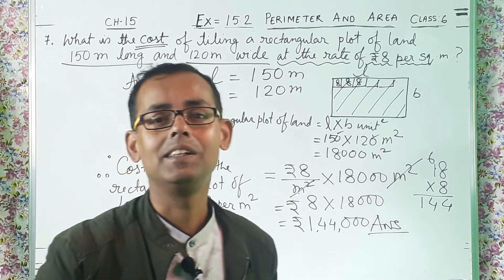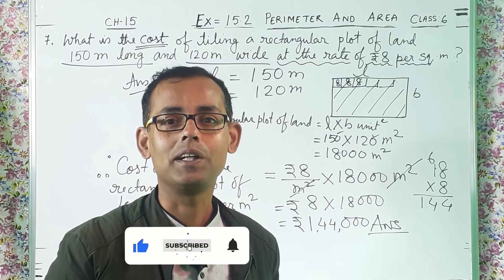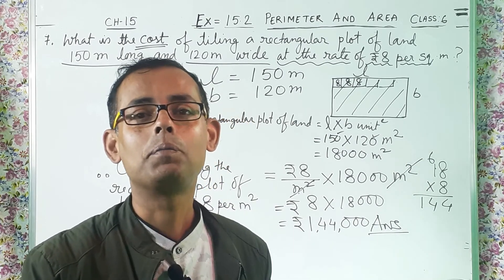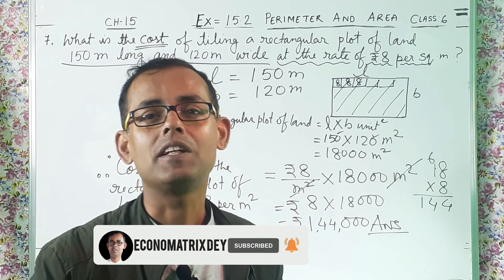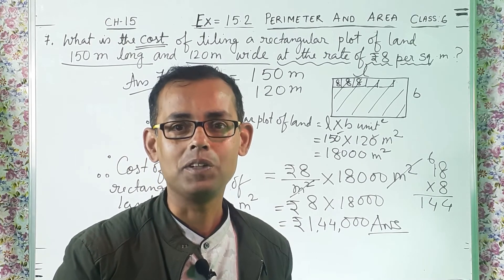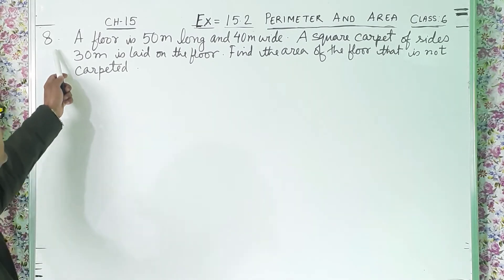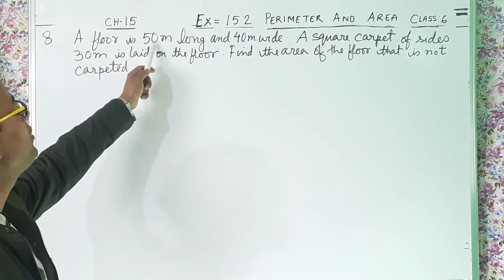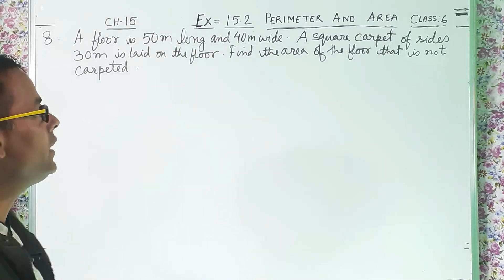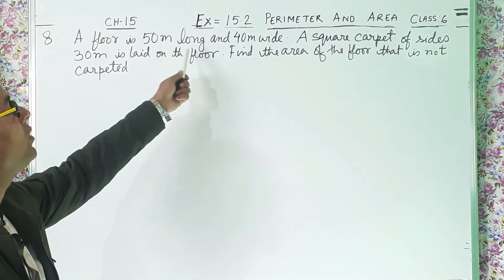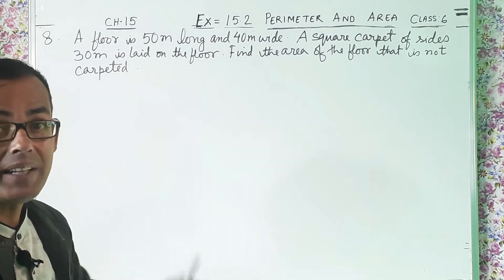If you like my channel, please give a like, share it with your friends, and don't forget to subscribe my channel. Also press the notification bell so that whenever I upload such videos you will get the notifications first. Now let us see question number 8: a floor is 50 meter long and 40 meter wide — so the length of the floor is 50 meter and the breadth of the floor is 40 meter.